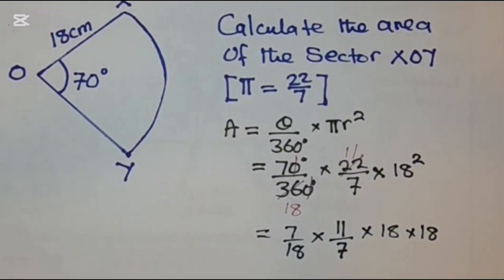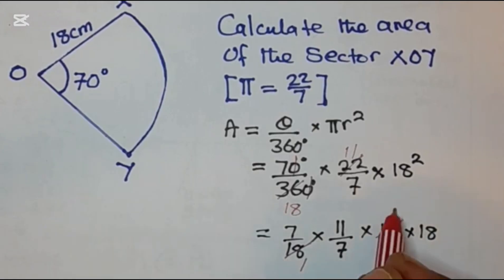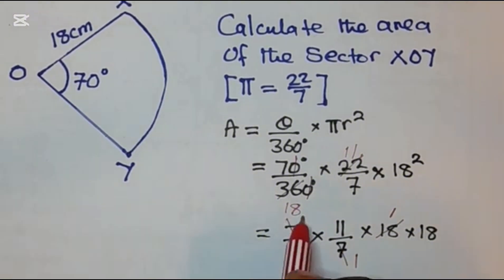You can see that at this stage, 18 into 18 is 1, so you can cross cancel here. Again you can see that 7 into 7 is 1.